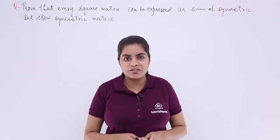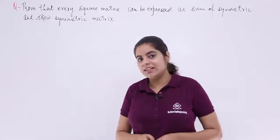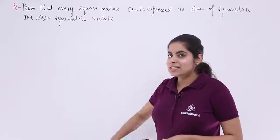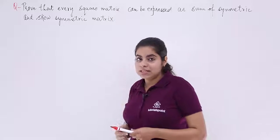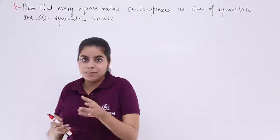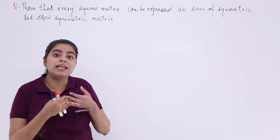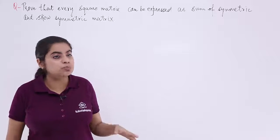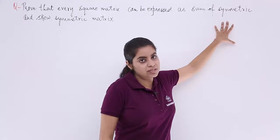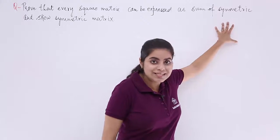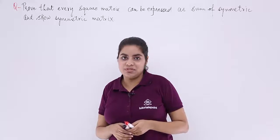Let's read what the question has to say and get started with the proof. The question says: prove that every square matrix can be expressed as a sum of two matrices, one symmetric and the other skew symmetric.